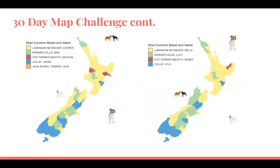Another map looked at the most popular breeds and names of dogs owned in New Zealand. On the left we've got male dogs and on the right female dogs. You can see that Labrador Retrievers are extremely popular. For males, the most common name was Cooper, and for females it was Bella. We also had Border Collies, Fox Terriers, Collies, and Jack Russell Terriers in Nelson — which is actually where I'm from. I mentioned this to my dad and he said, 'Oh yes, all the old people are living in Nelson — they all have a Jack Russell.' I don't know if that's true, but yeah.